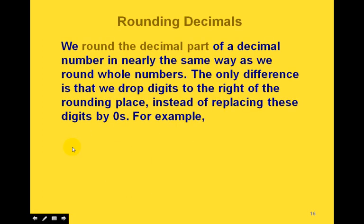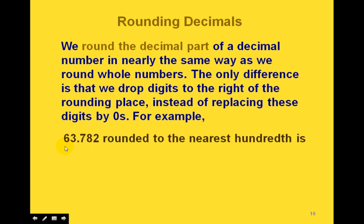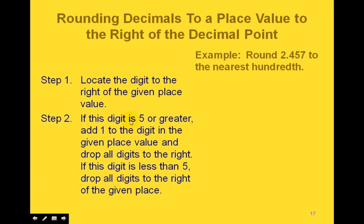When rounding decimals, we do this in almost the same way as rounding whole numbers. The only difference is that we drop digits to the right of the rounding place instead of replacing them with zeros. For example, rounding 63.782 to the nearest hundredth: we look at the place to the right of the hundredths place — it's a 2. Since 2 is less than 5, we just drop it and leave the digit in the hundredths place, the 8, the same.